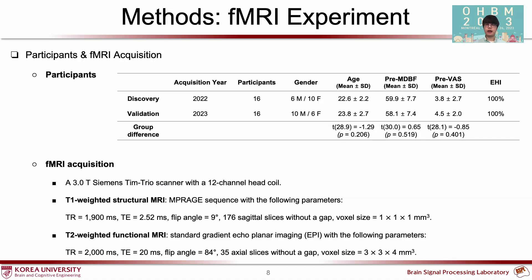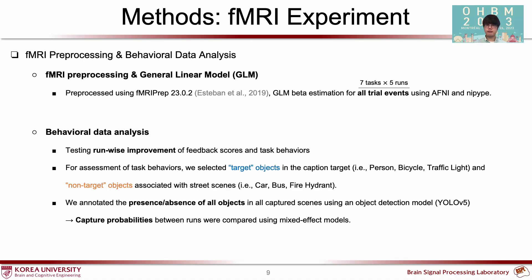We analyzed a total of 32 participants. We divided participants into the discovery and validation group to check reproducibility of our analysis, and there was no significant difference between the two groups. MRI images were acquired using a 3T scanner. We preprocessed the MRI data using fMRIPrep, AFNI, and Nipype.